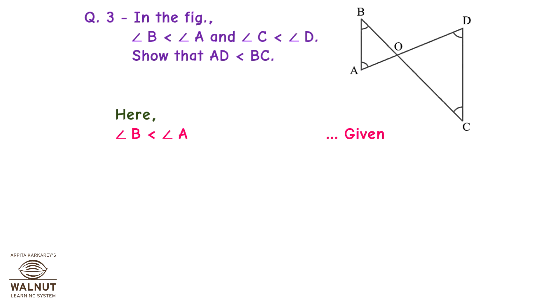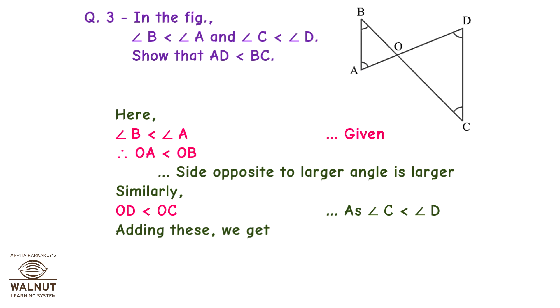Here, angle B is less than angle A, given, therefore OA is less than OB. Side opposite to larger angle is larger. Similarly, OD is less than OC as angle C is less than angle D. Adding these we get OA plus OD is less than OB plus OC. Therefore, AD is less than BC. Done!